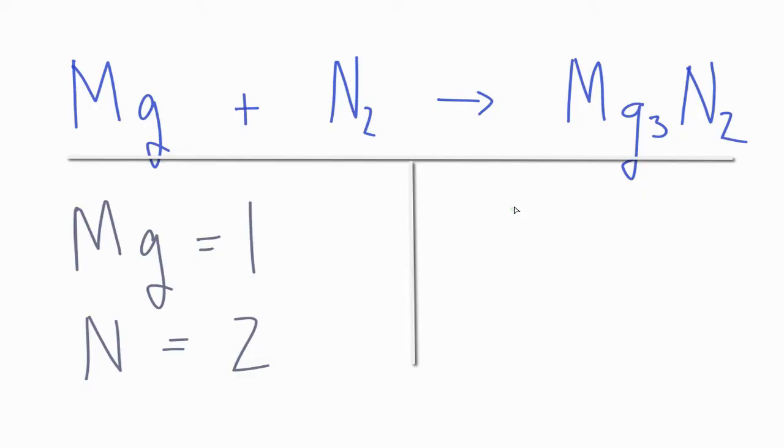On the product side, magnesiums, we have three, and nitrogens, we have two.